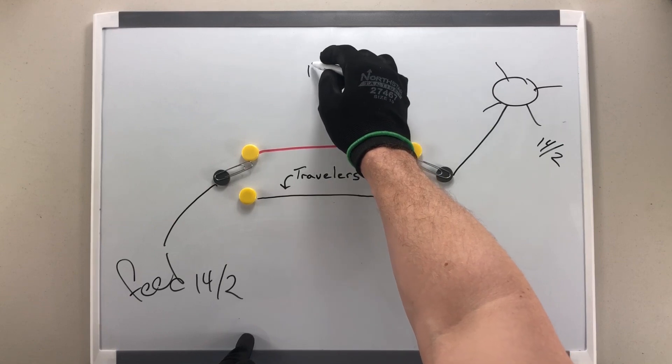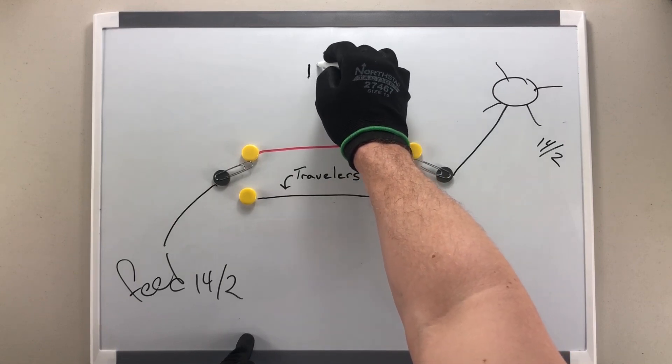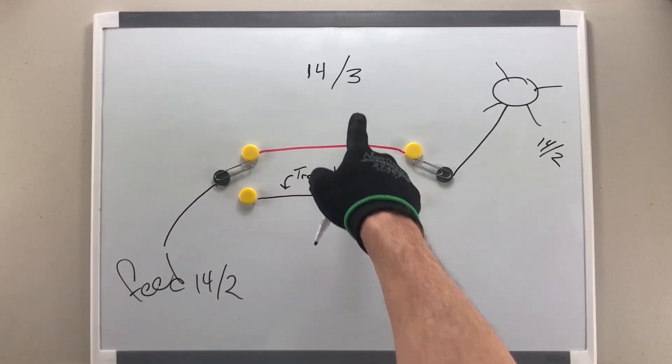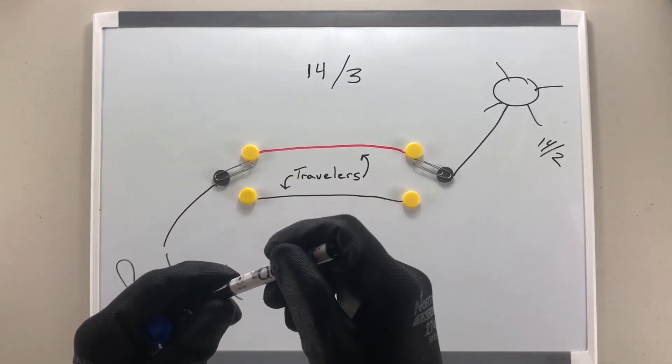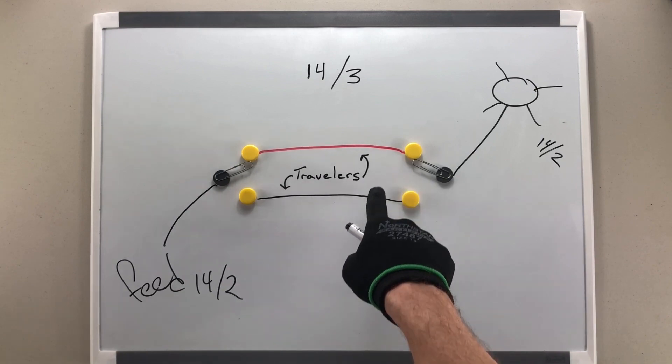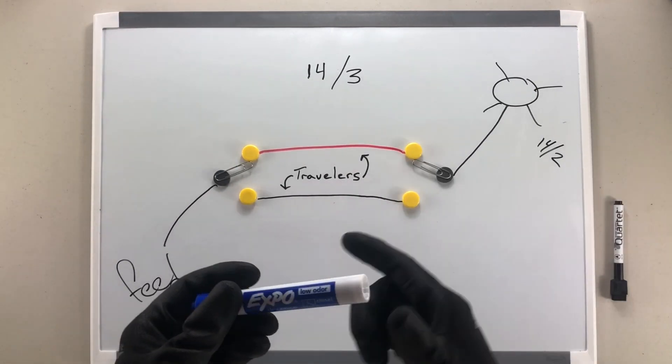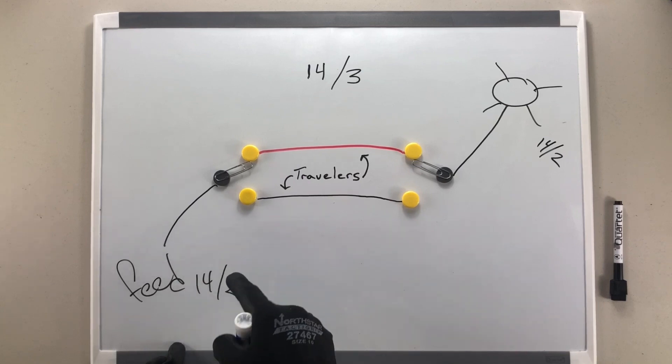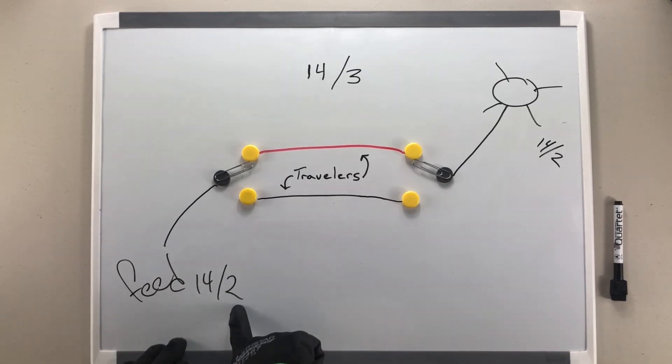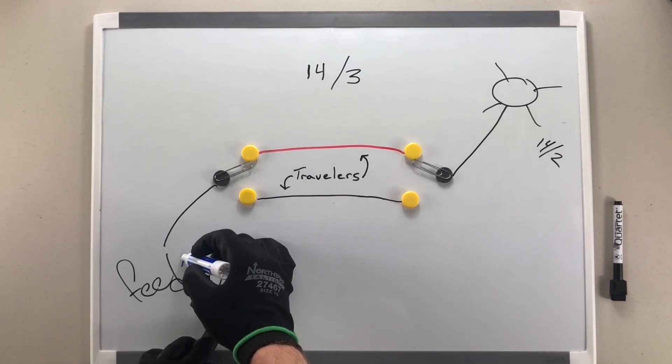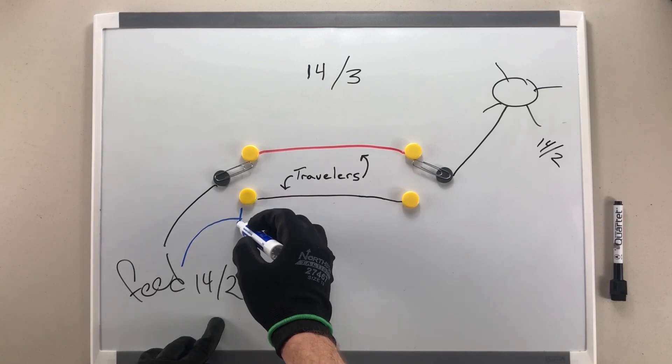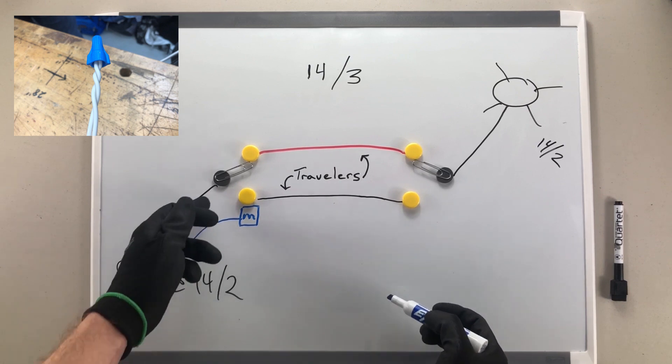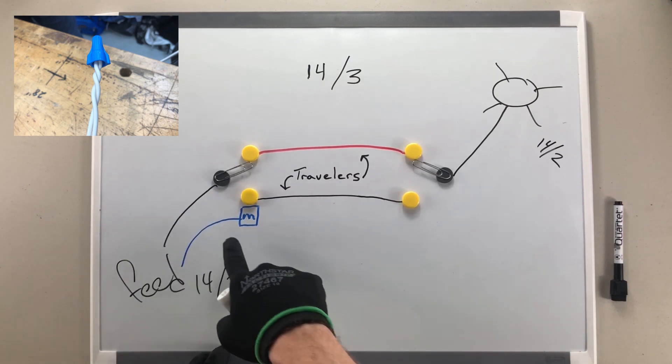Now, in the middle connecting these two, we have a 14-3 with three current carrying conductors. You see a red, a black, that's two of the three. The last one is a neutral. Our neutral from our feed, which will also be included in this two current carrying conductors here, will come up into this box, and we're actually just going to make a little wire nut connection here with our neutral.